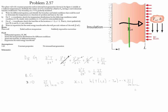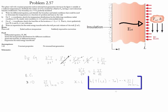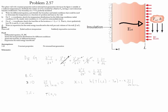At x = 0 this is a second kind boundary condition, and at x = L this is a third kind boundary condition. Let's now do the initial condition. Since the temperature was fixed at the beginning of time, we can simply write it as T at any position x at time equal to 0 equals the initial temperature Ti.